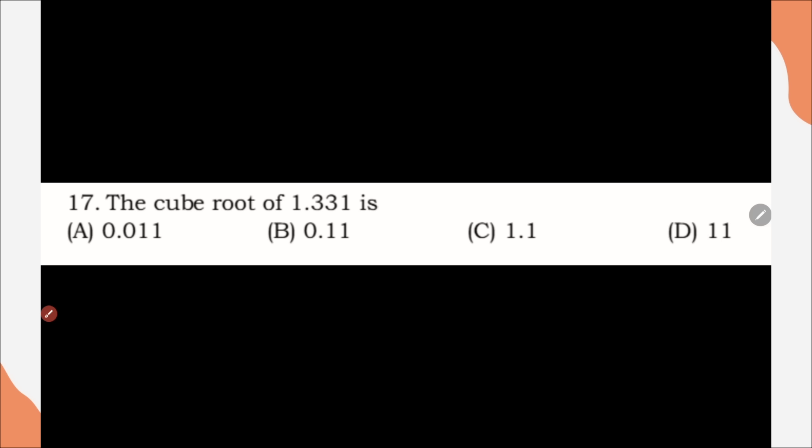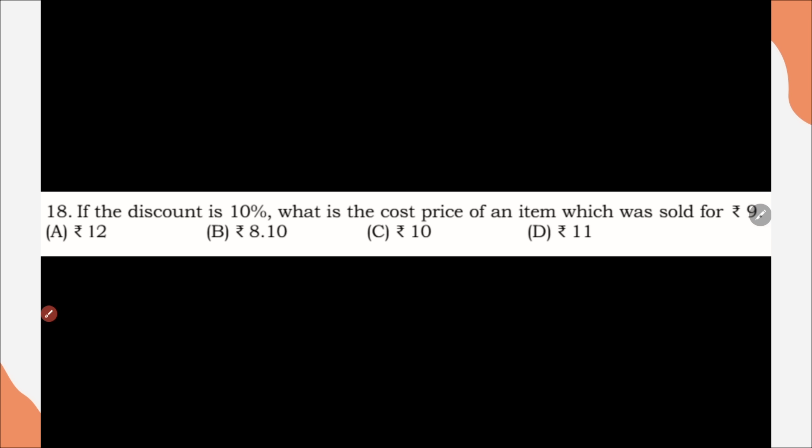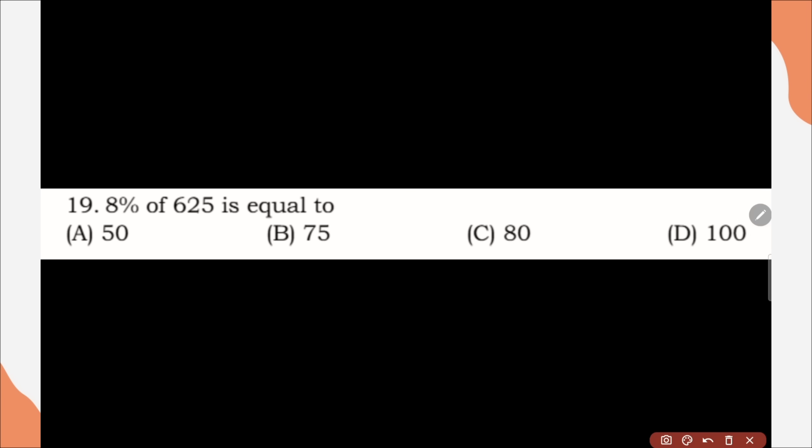Question number 17, the cube root of 1.331 is, correct option is option C. Question number 18, if the discount is 10%, what is the cost price of an item which was sold for 9 rupees? Correct option is C. Question number 19, 8% of 625 is equal to, correct option is A, 50.